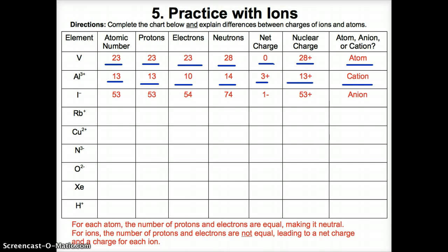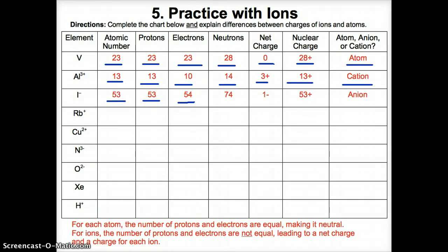For I⁻, the atomic number is 53, giving 53 protons. The 1- charge means we add one electron to the neutral atom's 53 electrons, giving 54 electrons. Neutrons equal I's rounded mass number of 127 minus atomic number 53, giving 74 neutrons. Net charge equals 53 protons minus 54 electrons, giving 1-. Nuclear charge is 53+. Since this is a negative ion, it is an anion.